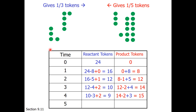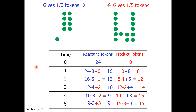Now we are at 9 reactant and 15 product tokens. One third of 9 is 3, and one fifth of 15 is also 3. We put 3 tokens forward and 3 tokens reverse. We are still at 9 to 15. Our forward rate is 3 and our reverse rate is 3 — that is equilibrium: the forward and reverse rates being equal.